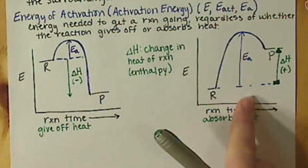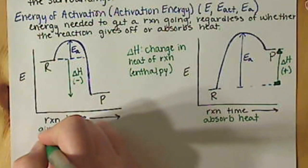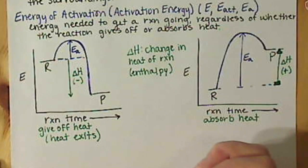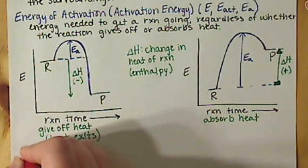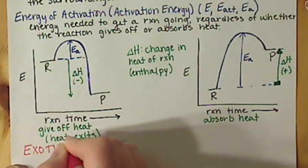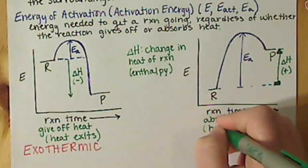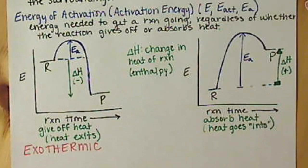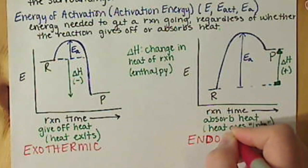I have two different terms for these types of reactions. For a reaction that's going to give off heat, you can think of this heat as it is exiting — it exits the reaction. So what that means is that we have what's called an exothermic reaction. For when we're absorbing heat, our heat is going into the reaction — we're having to add heat — and that's an endothermic reaction.